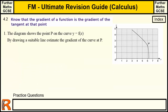Let's have a go at question one. The diagram shows the point P on a curve y equals f of x. We're not told the function, we're just told it's a curve, and we've got to draw a suitable line to estimate the gradient of the curve at P. This is checking that you know that to get an estimate of the gradient of the curve at a point, we need to draw a tangent — a line at that point — and then estimate the value of the gradient of that line.